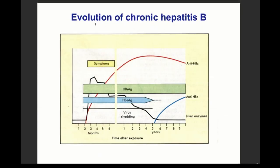In chronic hepatitis B, liver enzymes elevate then reduce after about six months, and symptoms disappear, but the patient continues producing virus. HBsAg remains persistently in the blood, anti-HBc is still produced, and virus shedding continues. The chronic phase is characterized by the absence of anti-HBs.